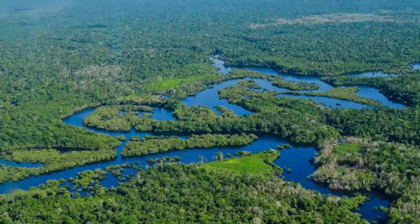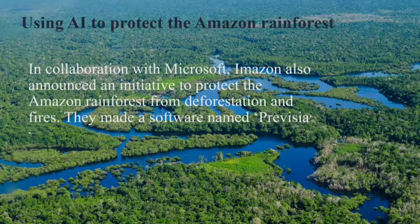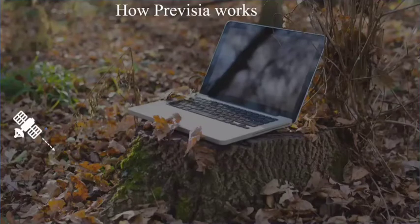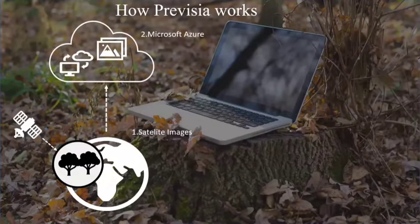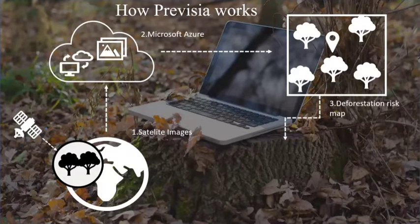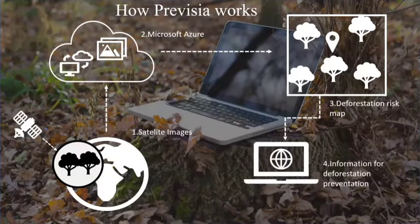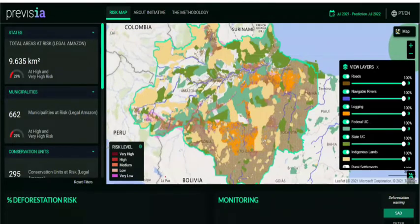Now we will discuss how AI can be used to protect the Amazon rainforest. In collaboration with Microsoft, Amazon also announced an initiative to protect the Amazon rainforest from deforestation and fires. They made software named Provisia. Amazon uses satellite images of Brazil's Amazon rainforest, stores them in the Azure cloud, where an AI algorithm detects unofficial roads and other risk factors of deforestation. The resulting output is visualized in an interactive map highlighting high-risk areas.